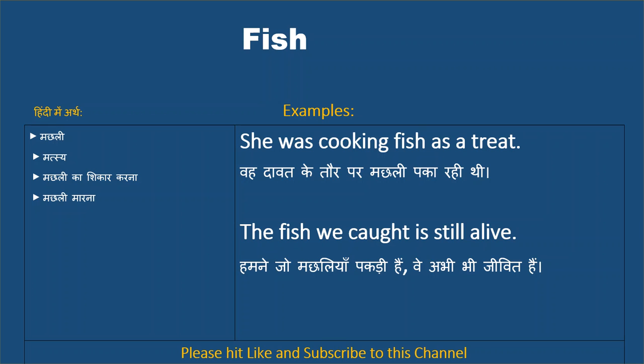She was cooking fish as a treat. Muts. Treat means cooking means. Another example: The fish we caught is still alive. We have caught the fish. They are still alive. Alive means...